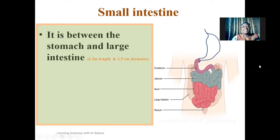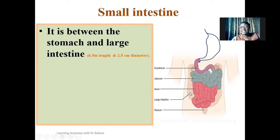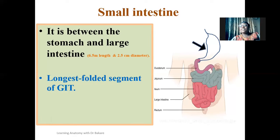The small intestine is seen between the stomach and the large intestine. This is the stomach up here, highlighted in blue, and down here is where we have the large intestine. The small intestine is about 6.5 meters in length and about 2.5 centimeters in diameter. It is the longest region of the GI tract, and it appears to be folded over itself.